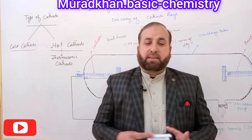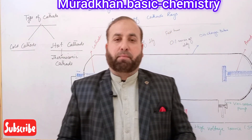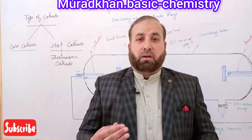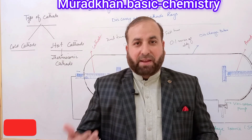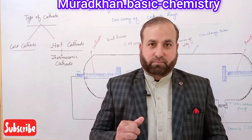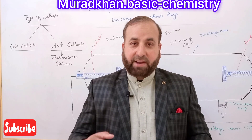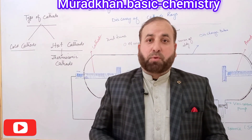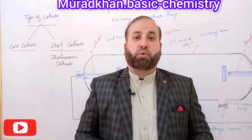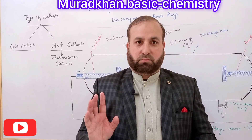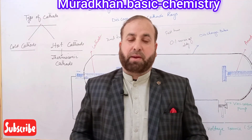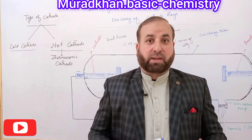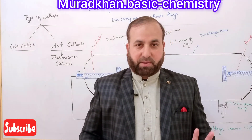We have divided cathodes into two types: cold cathode and hot cathode. We remember that William Crookes used cold cathodes in his destructive experiment. His experiment about the discovery of the electron is known as the cold cathode experiment.